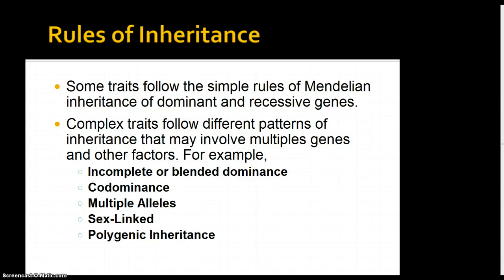These follow different patterns of inheritance. They can involve multiple genes and other factors. There are a lot of different types of forms of inheritance. We're going to look at five here: incomplete or blended dominance, co-dominance, multiple alleles, sex-linked, and polygenic.